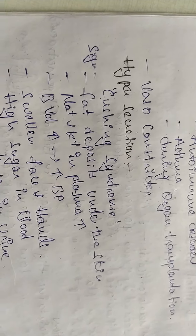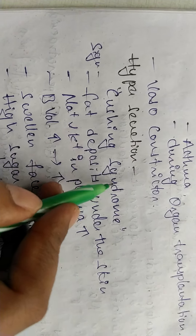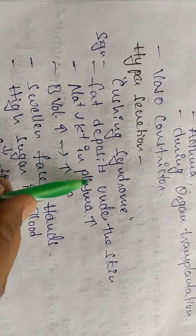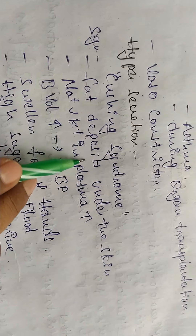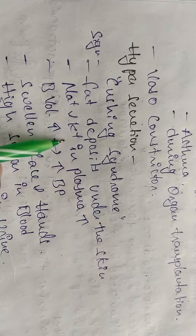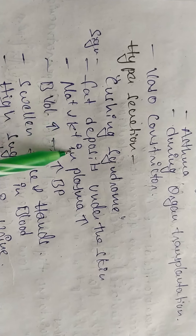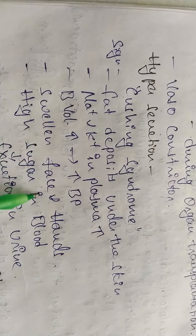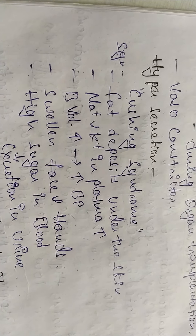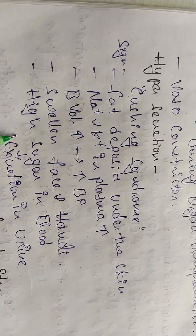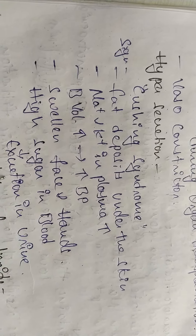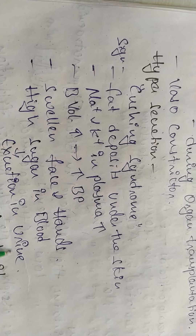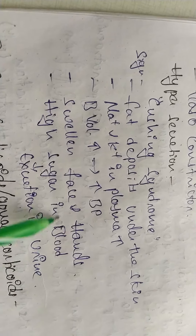Hypersecretion of glucocorticoids may lead to Cushing's syndrome. Signs include fat deposits under the skin, increased sodium and potassium levels in plasma, increased blood volume leading to hypertension, swelling of the face and hands, high blood sugar levels, and excretion of sugars in urine.